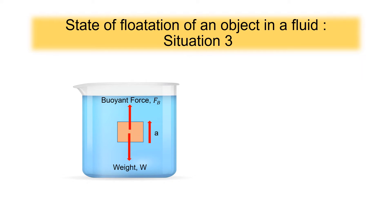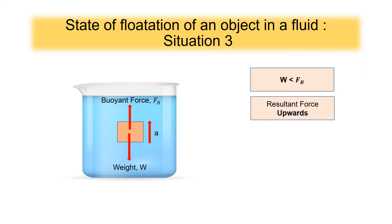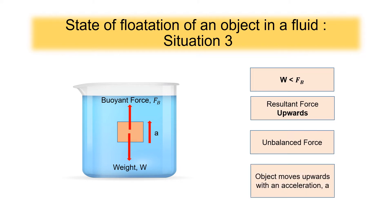Whereas in situation 3, the object moves upward. This shows the buoyant force is greater than the weight of the object in magnitude. Thus, the resultant force is upward and the force is unbalanced. The object moves upward with an acceleration A.